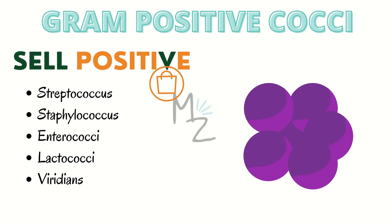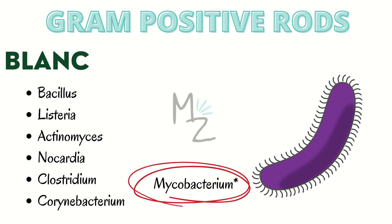Let's start with gram positive cocci. I've got a mnemonic for memorization: 'SELL POSITIVE.' S is for Streptococcus and also Staphylococcus. E is for Enterococci. L is for Lactococci — there are two L's, so you can use the second one for Lactococci as well. V is for Viridans. I've put a shopping bag on the V so you can remember we are going to 'sell positive.'